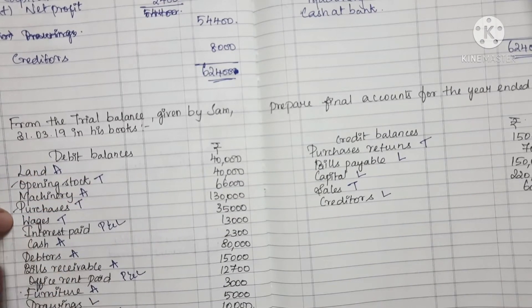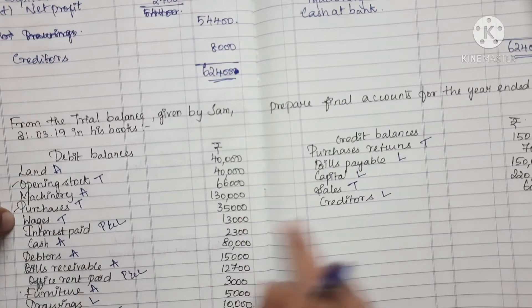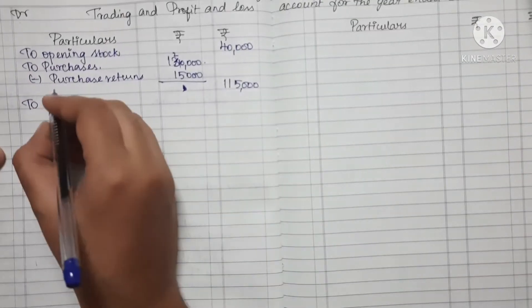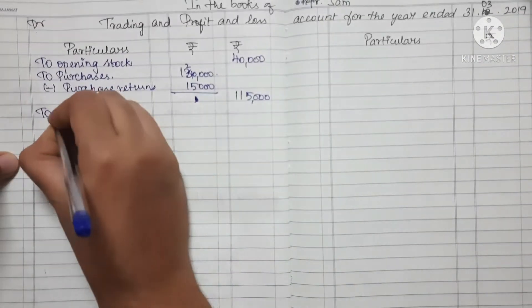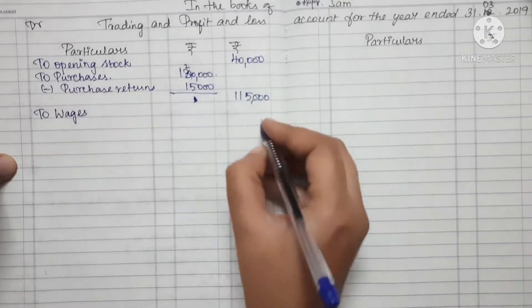Next we have Wages: 35,000. Total for the debit side is 1,90,000.